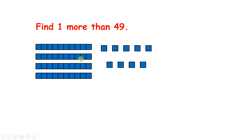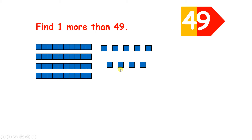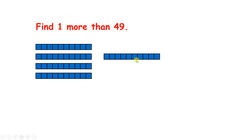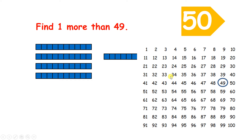Find one more than 49 — so we have 4 tens and 9 units. And if we add one more unit, now we have 10 units, so we can make another 10. So we have 5 tens, and that's 50. Remember, on the 100 square, if we move one to the right, we add one. So one more than 49 is 50.